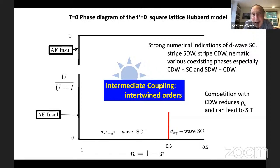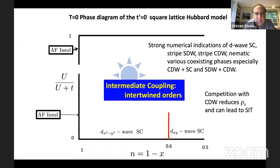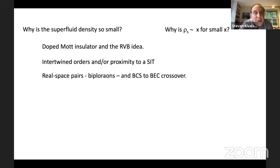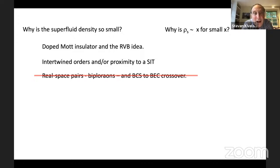Along with this comes the obvious statement that competition — at least with charge density wave order — tends to reduce the superfluid density and can lead to a superconductor-to-insulator transition. If electrons are condensed into the charge density wave, they're not condensed into the superconducting condensate.